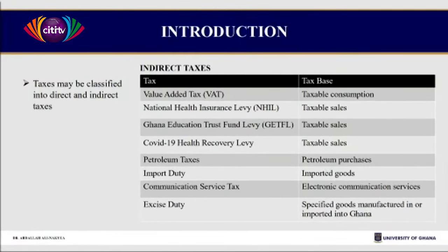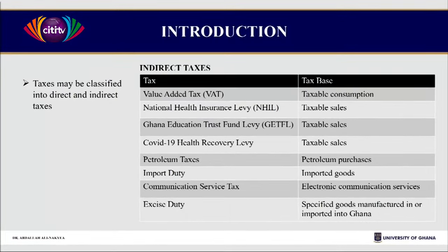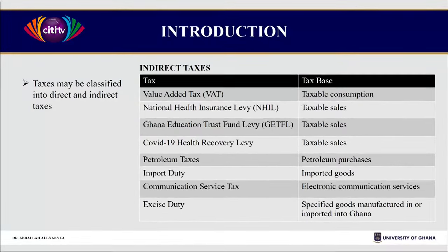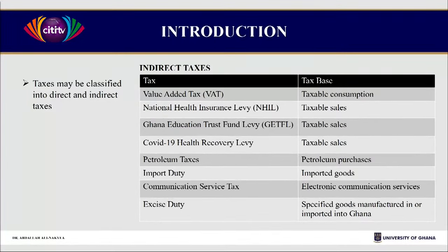The GRA is now doing compliance audits and visits, and you hear all the issues that are arising. VAT is on taxable consumption. We have the National Health Insurance Levy on taxable sales, the GET Fund — Ghana Education Trust Fund — on taxable sales, the COVID-19 Health Recovery Levy also on taxable sales, petroleum taxes, import duty on imported goods, communication service tax, and excise duty. Those are the ranges of taxes that will confront you, whether dealing with direct or indirect taxes.